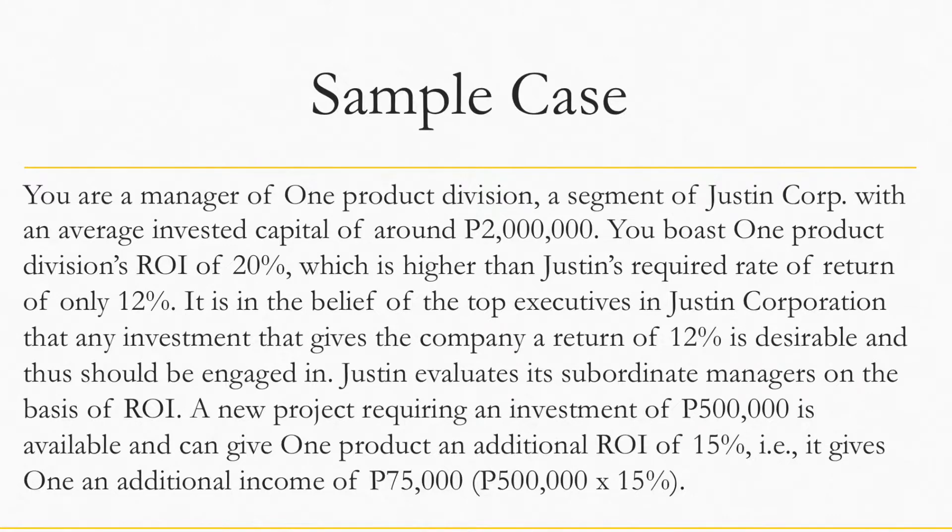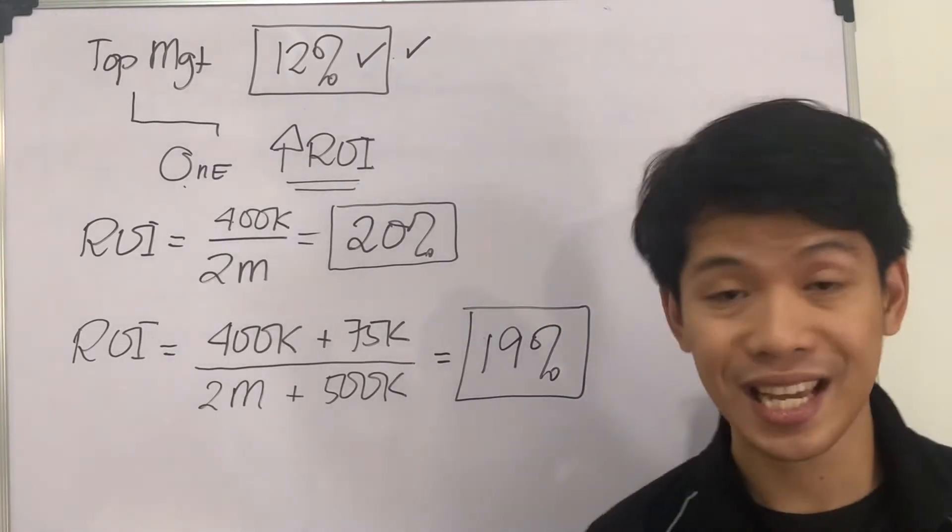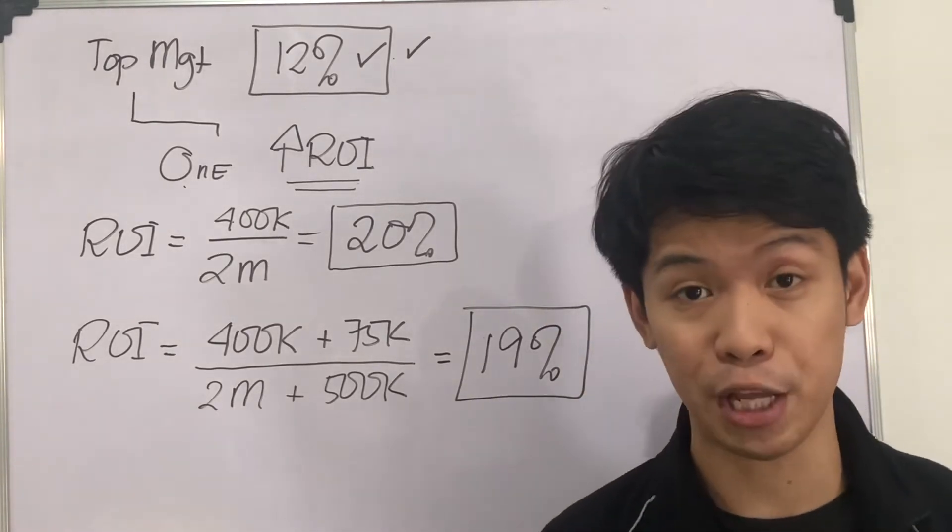It is in the belief of the top executives in Justine Corporation that any investment that gives the company a return of 12% is desirable and should be engaged in. Justine evaluates its subordinate managers on the basis of ROI. A new project requiring an investment of $500,000 is available and can give one product an additional ROI of 15%. That is, it gives an additional income of $75,000, which is $500,000 times 15%.